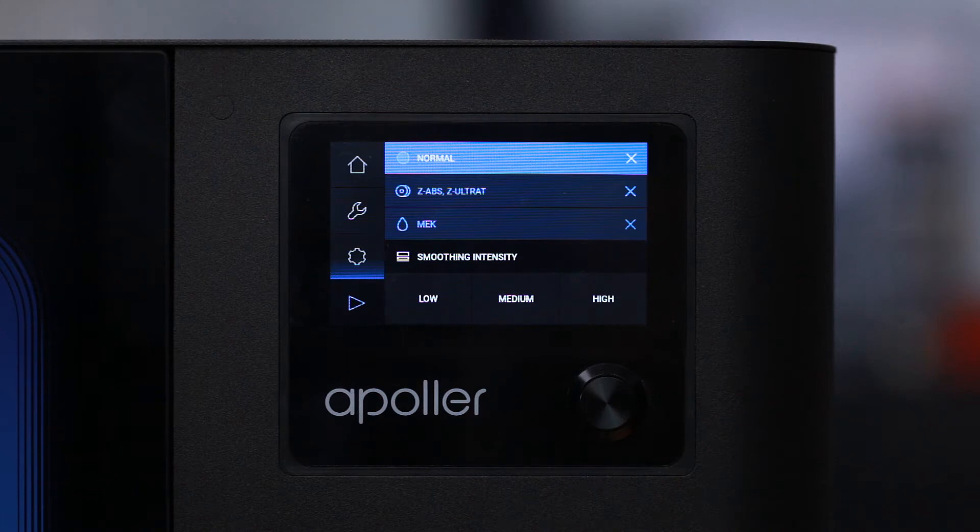The last step is to choose the smoothing intensity. There are three options available: low, medium, and high.